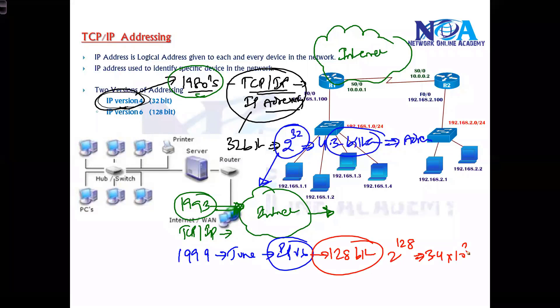Almost like 3.4 times 10 to the power of 38 addresses, where almost each human can get an IP address. Even if the internet grows more than double every year for the next 50 years, we can survive without any shortage.